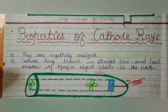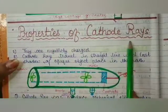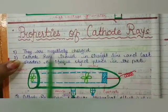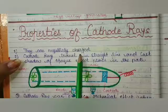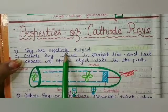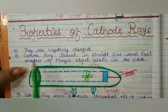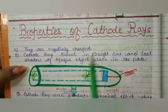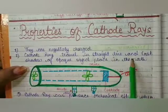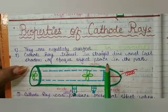I am telling you the properties of cathode rays. The properties of cathode rays: they are negatively charged. You know the electrons are negatively charged. Cathode rays travel in a straight line and cast a shadow on an opaque object.